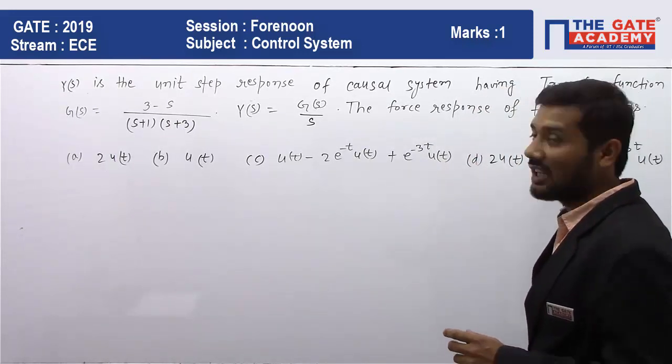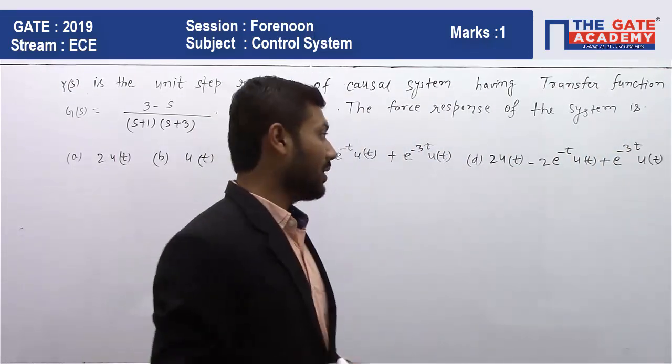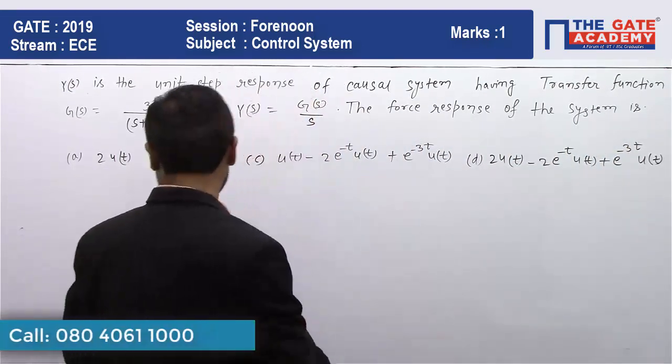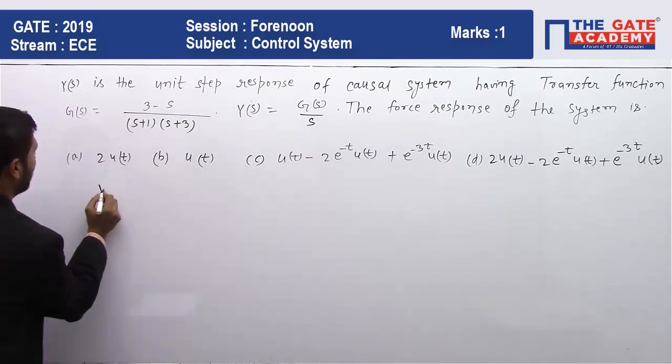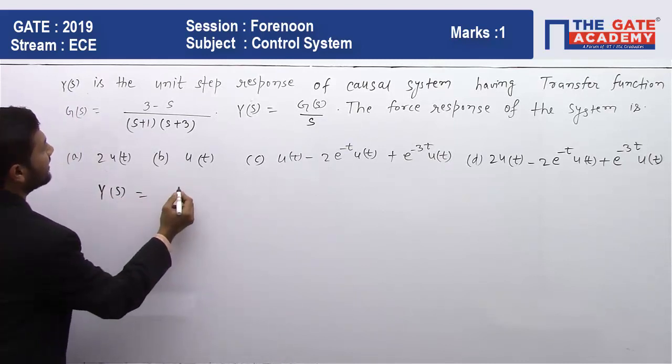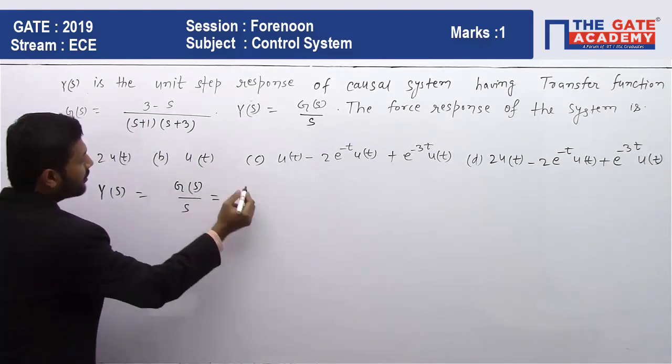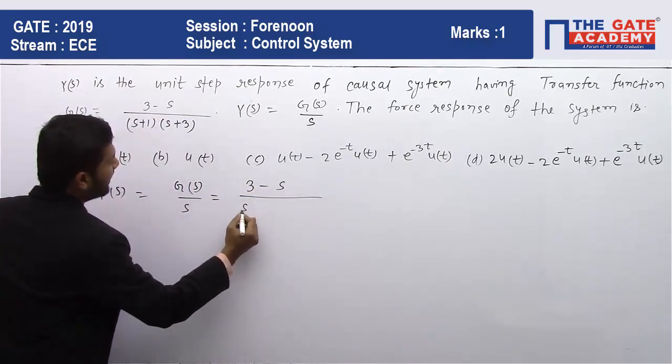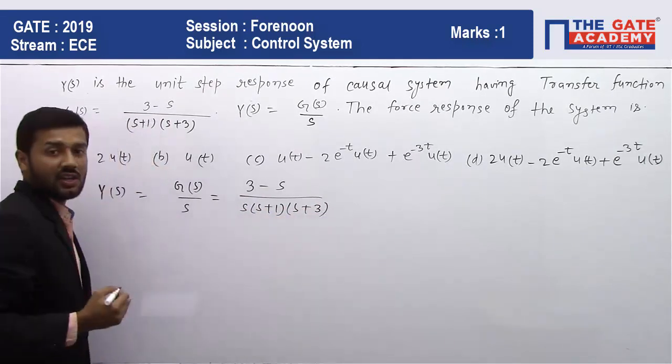And the fourth one is 2u(t) - 2e^(-t)u(t) + e^(-3t)u(t). So we are going to solve this question. First of all, we have Y(s) = G(s)/s, and that equals (3-s)/[s(s+1)(s+3)].